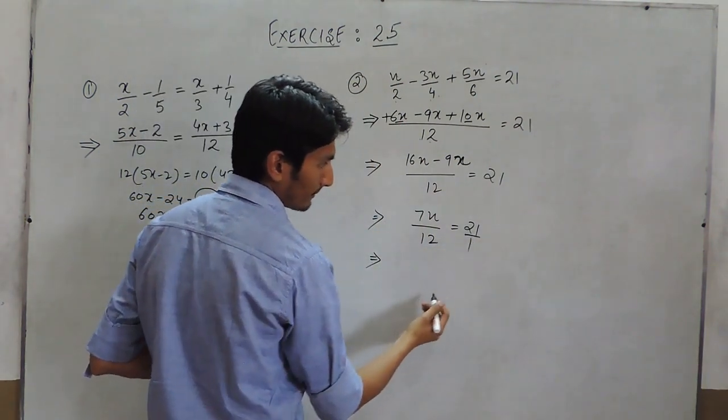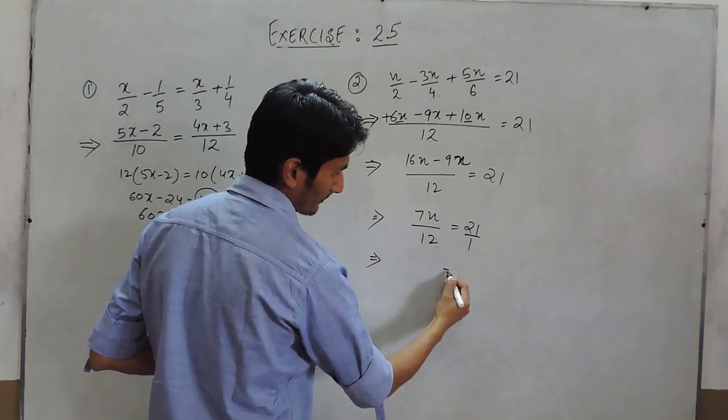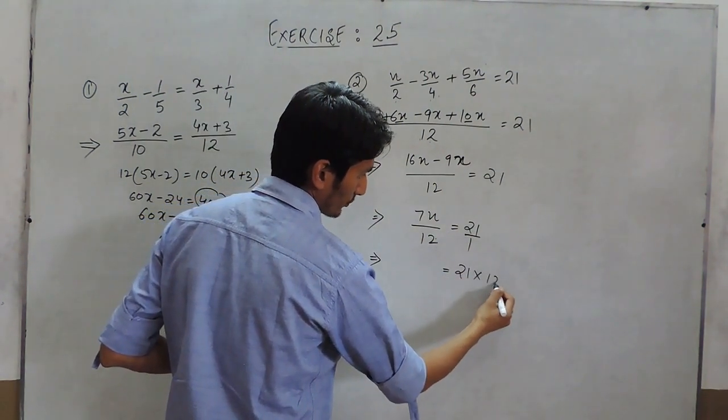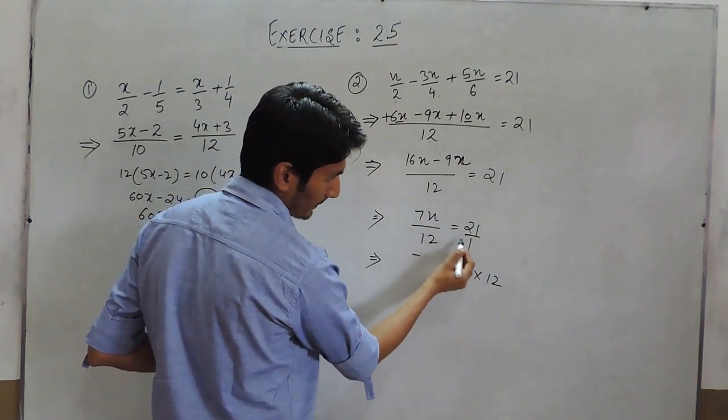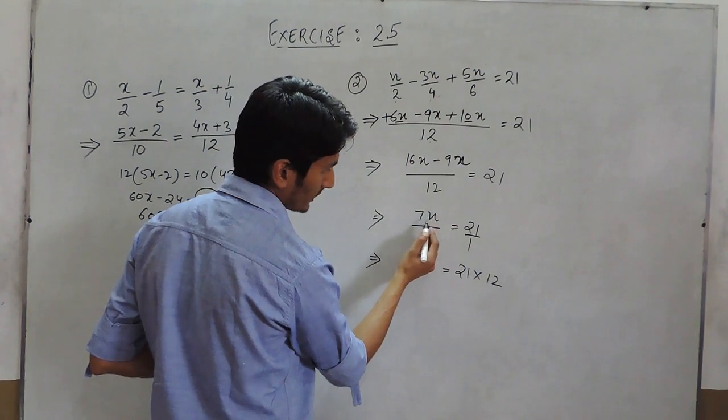Now, we can cross multiply it. This when multiplied will give 21 upon 12.